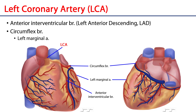Now let's take a look at the LCA. The LCA arises from the left coronary sinus, travels behind the pulmonary trunk into the coronary sulcus, and branches into the anterior interventricular branch — also known as the left anterior descending, or LAD — which hosts septal branches supplying the interventricular septum. The other branch is the circumflex branch, which stays within the coronary sulcus and wraps around to the posterior aspect of the heart, sometimes reaching the crux but most of the time not.